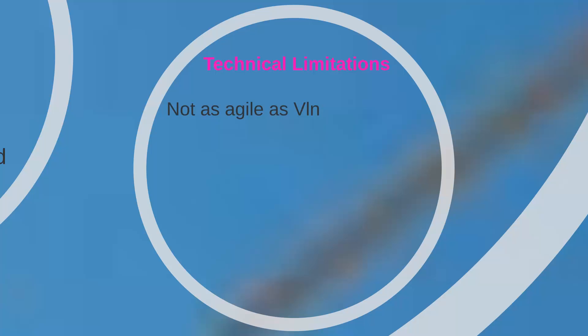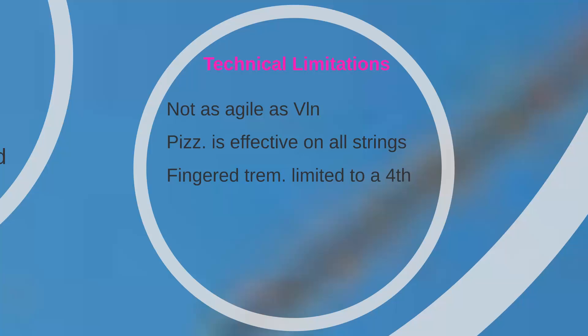The viola is not as agile as the violin, but its capabilities are similar in many ways. The pizzicato is quite effective on all strings, although the best effect is obtained in the range of an octave above each open string. The fingered tremolo is limited, as on the violin, to the range of a fourth, and the second through fourth partials may be used effectively for natural harmonics.